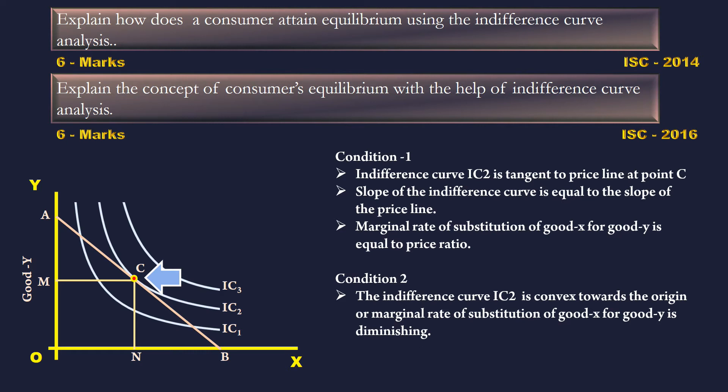The slope of the Indifference Curve is equal to the slope of the price line. The Marginal Rate of Substitution of good X for good Y is equal to the price ratio.